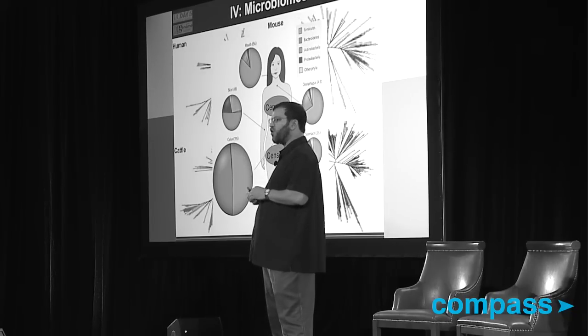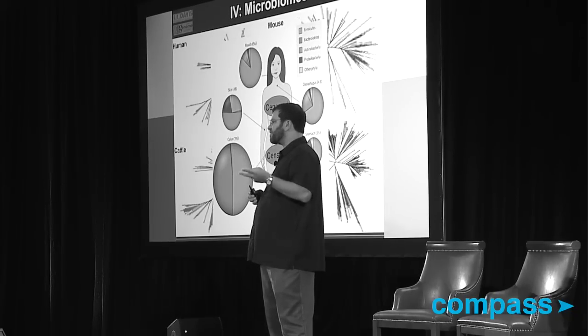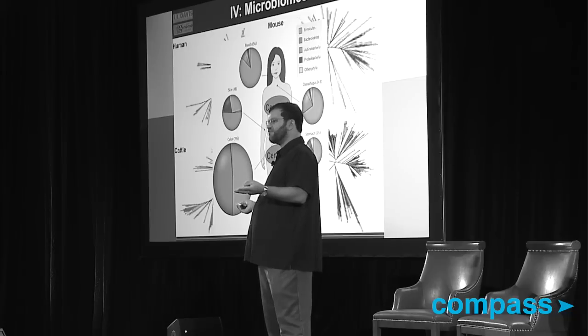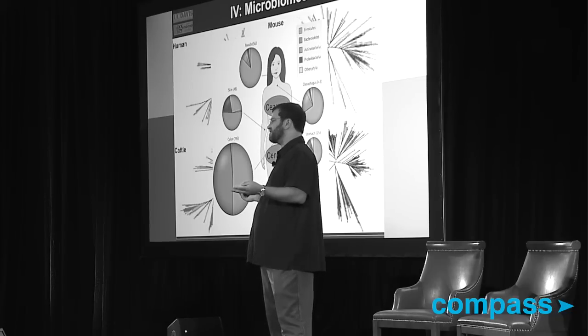If you look in the colon, for example, there are predominantly two phyla of bacteria represented. There are probably hundreds of phyla of bacteria. Why are there only those two represented in the colon? We still don't completely understand.